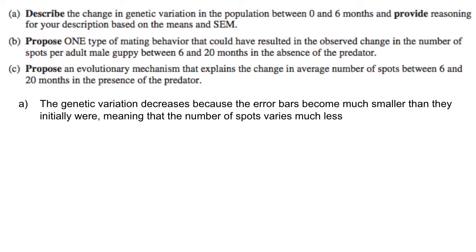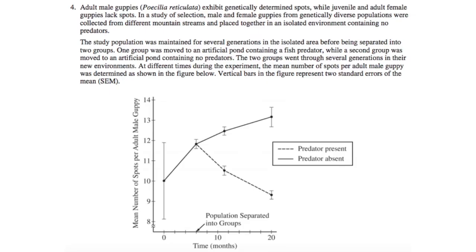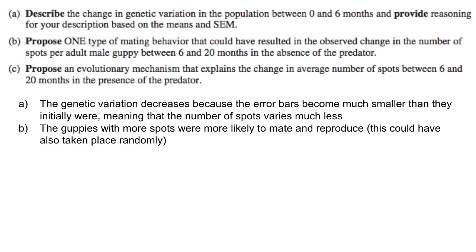Part B: Propose one type of mating behavior that could have resulted in the observed change in the number of spots per adult male guppy between six and twenty months in the absence of the predator. In the absence of the predator, the number of spots went up from about 12 to about 13. We can infer that the guppies with more spots were more likely to mate and reproduce, hence the increase in the average number of spots. This could also have taken place randomly — it's not that unlikely.